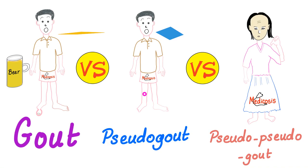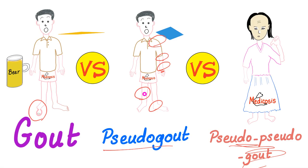Gout — where is the problem? It's an inflammatory arthritis. The big toe is the problem. Pseudogout? The knee is the number one joint. Other joints include the ankle, the elbow, the shoulder, the wrist, and the second and third metacarpophalangeal joints. Hydroxyapatite arthropathy? It's the shoulder — we call it the Milwaukee shoulder syndrome.